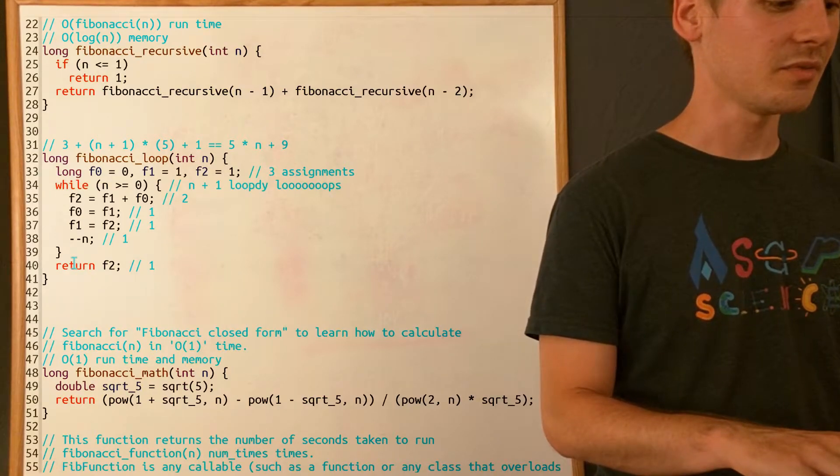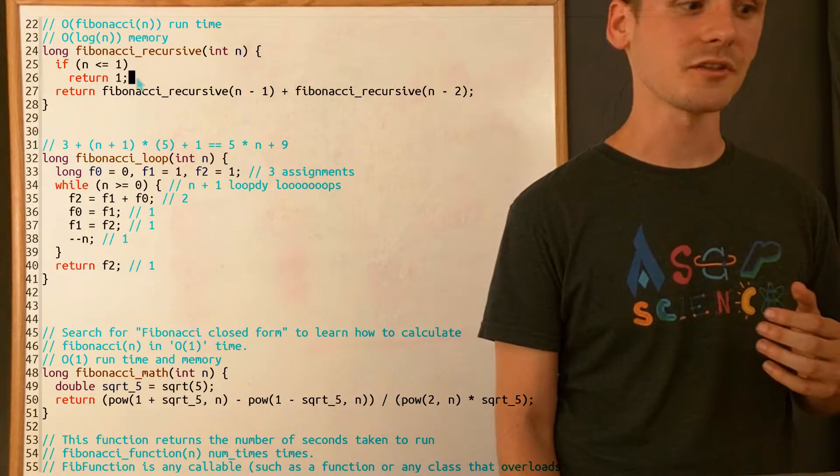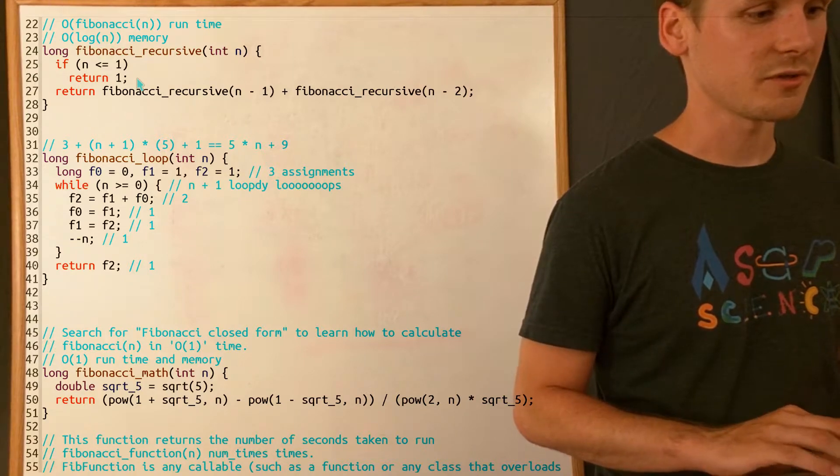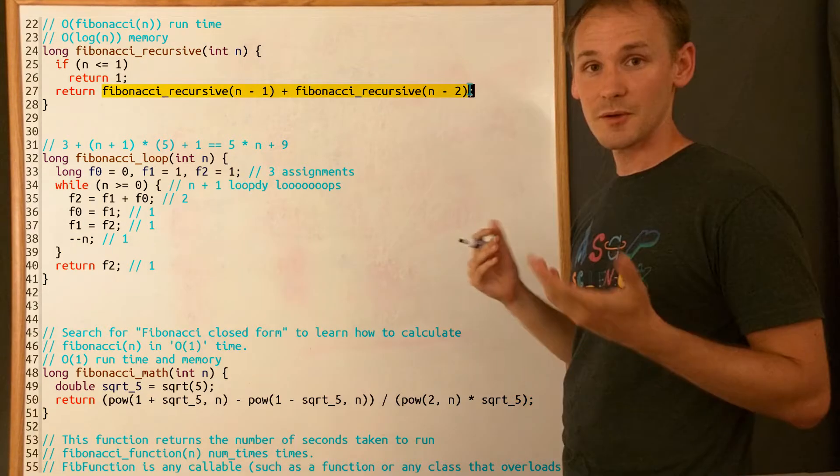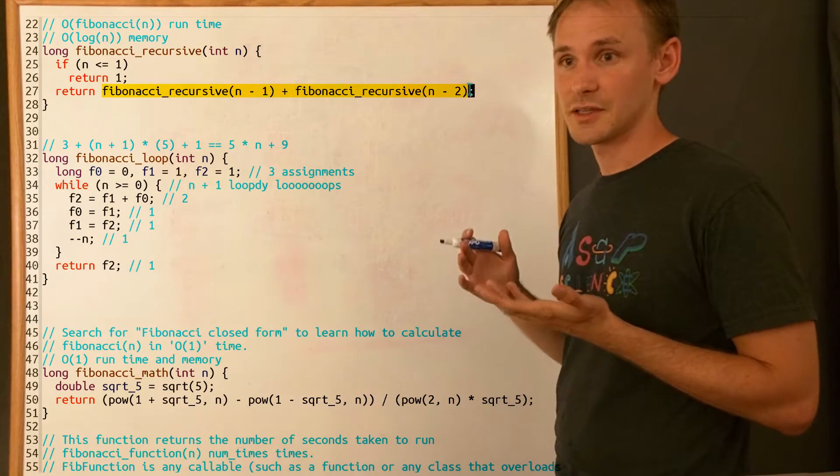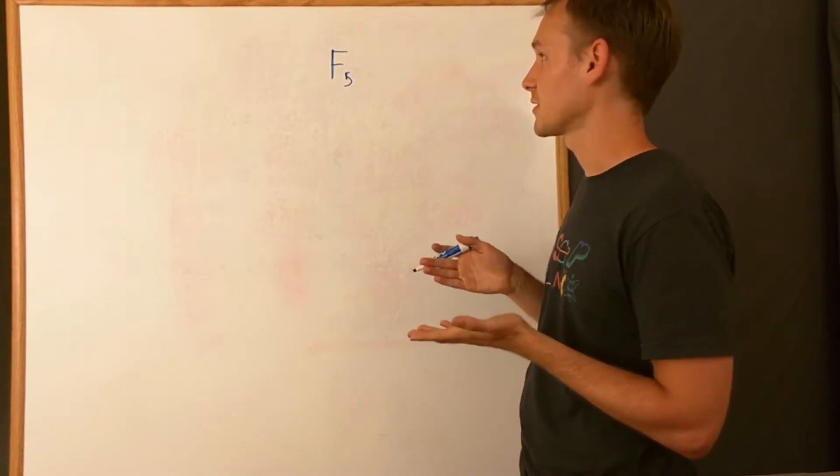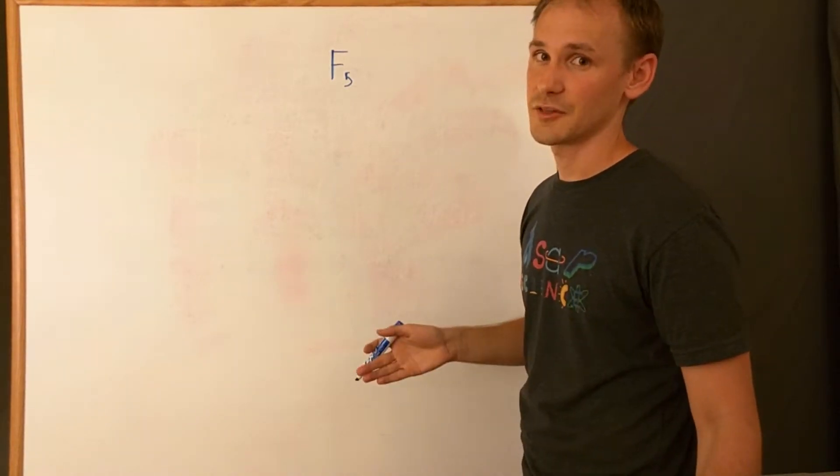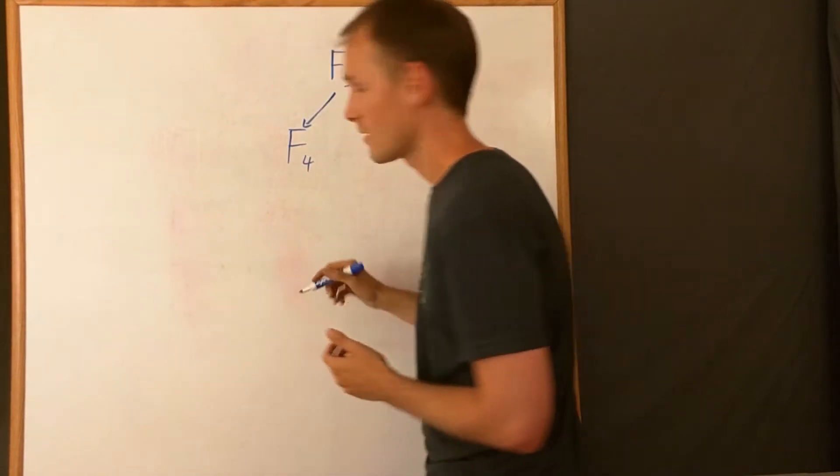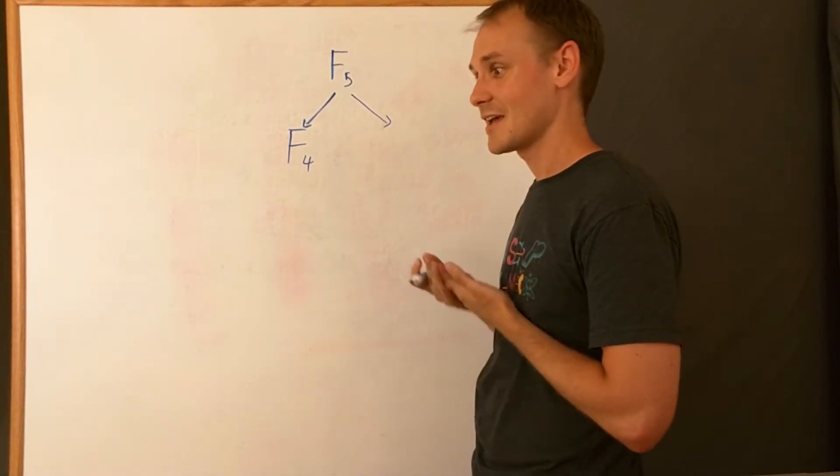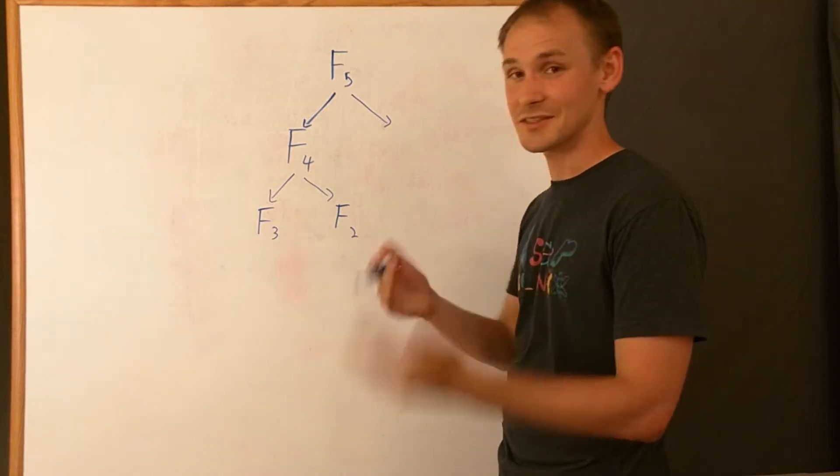The next step are the three different ways that we actually implement our Fibonacci function. The first one is a recursive solution that's basically based on the mathematical definition. If n is small, we just return 1, like if n is either 0 or 1, and otherwise we just add up the two previous ones. The problem with this is that it's exponential. If I try to calculate something like the fifth Fibonacci number, then I start out like this. In order to calculate the fifth Fibonacci number, first I have to calculate the fourth Fibonacci number and the third Fibonacci number.